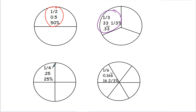A fourth of a fraction is the same as 0.25 decimal and 25%. And one sixth of a fraction is the same as 0.166 and 16 and two thirds percent.